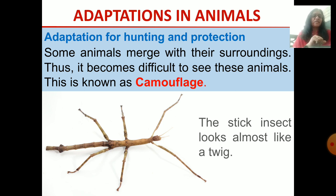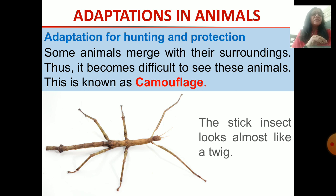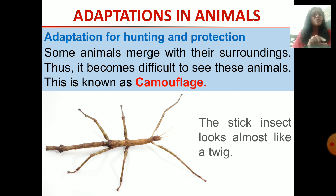You can see an example in the picture — the stick insect. This is an insect, but it looks like a stick. The stick insect looks almost like a twig. We might feel it is just a twig of some plant, but actually it is an insect. If it is in its surroundings, nobody can spot it as an insect. This is called camouflage — it merges with its surroundings so it becomes difficult to spot.